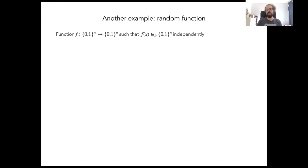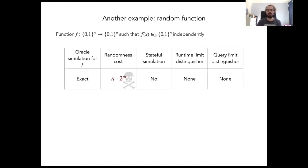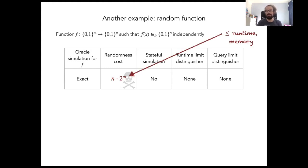Here's an example that's maybe a little bit more interesting, and that is the example of a random function. Let's say the function goes from the set of n-bit strings to the set of n-bit strings, and such a random function is picked uniformly at random from all such functions — meaning each output is independently uniformly random. The problem we want to solve is the oracle simulation problem: we should be able to interact with a distinguisher that expects oracle access to such a random function f in a way that they don't notice they're interacting with us instead of the random function. Doing this exactly costs a prohibitive amount of randomness, and note that randomness cost is also a lower bound for runtime and memory cost.